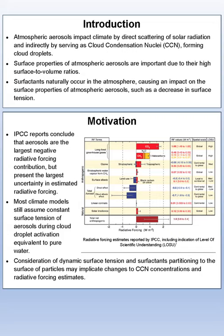To focus on the surface properties of atmospheric aerosols, most climate models still assume a constant surface tension of aerosols during cloud droplet activation equivalent to pure water, but this is only an assumption and has not been experimentally verified. We know that surfactants naturally occur in the atmosphere, causing an impact on surface properties of atmospheric aerosols such as decreasing surface tension. Consideration of this, as well as a dynamic surface tension, may implicate changes on the cloud condensation nuclei concentrations and radiative forcing estimates.